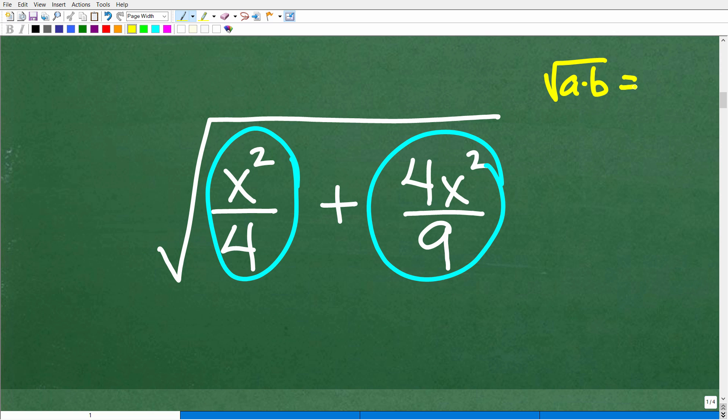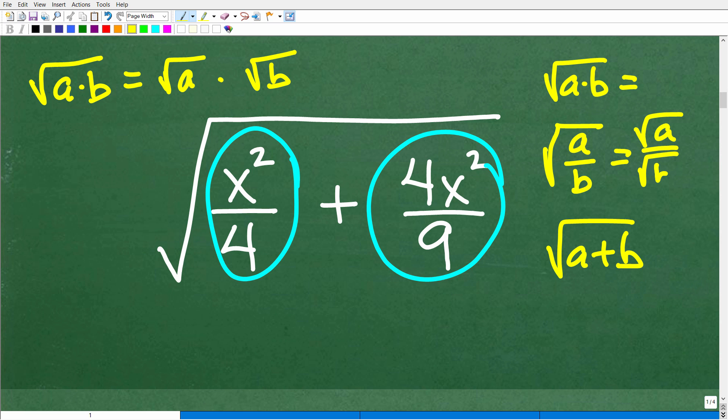There are properties of square roots. The square root of A times B is equal to the square root of A times the square root of B. The square root of A over B is the square root of A over the square root of B. But there is not a property for the square root of A plus B. A lot of students are going to confuse this situation for multiplication.